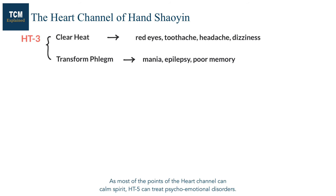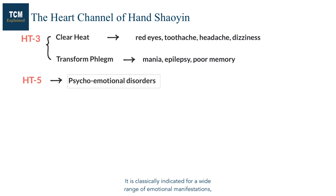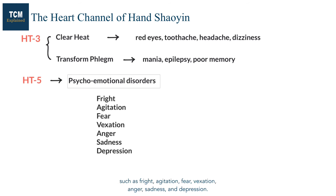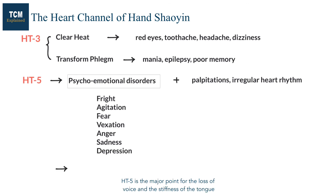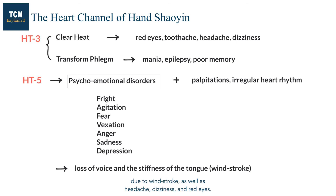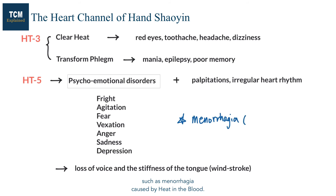As most points of the heart channel can calm the spirit, Heart 5 can treat psycho-emotional disorders. It is classically indicated for a wide range of emotional manifestations such as fright, agitation, fear, relaxation, anger, sadness, and depression. If there is concurrent palpitations or irregular heart rhythm, Heart 5 can be used because it can regulate the heart qi as well. Heart 5 is the major point for loss of voice and stiffness of the tongue due to wind stroke, as well as headache, dizziness, and red eyes. This point is also indicated for gynecological disorders such as menorrhagia caused by heat in the blood.